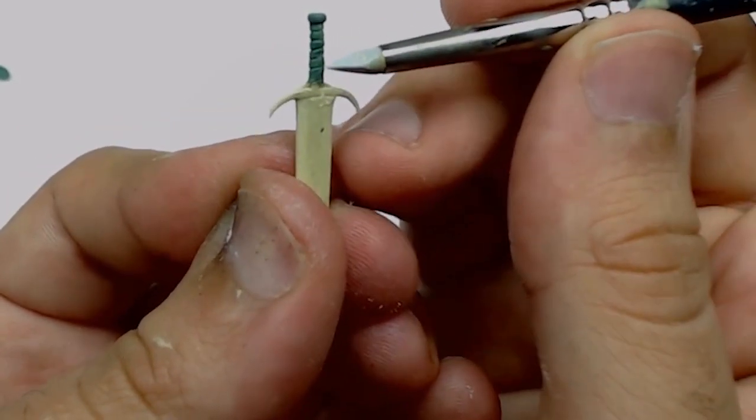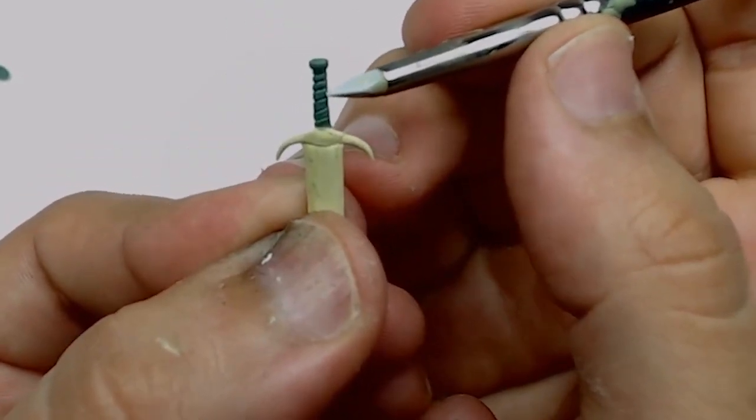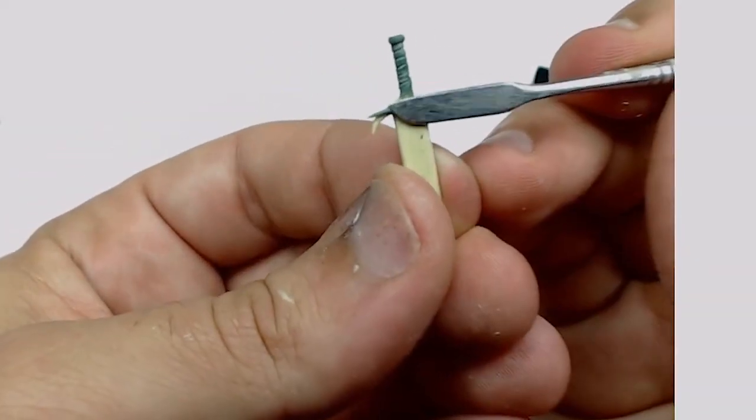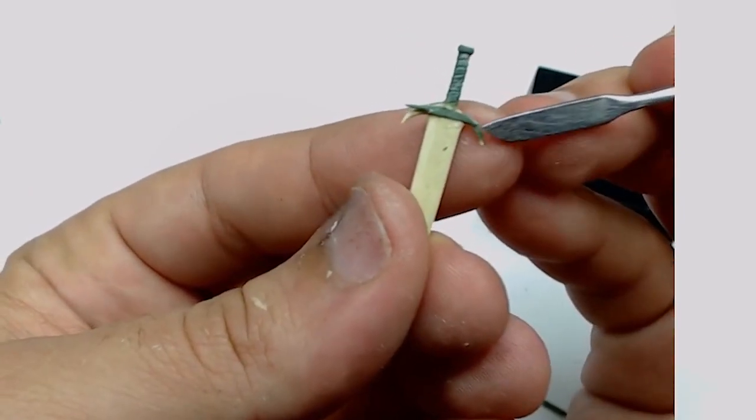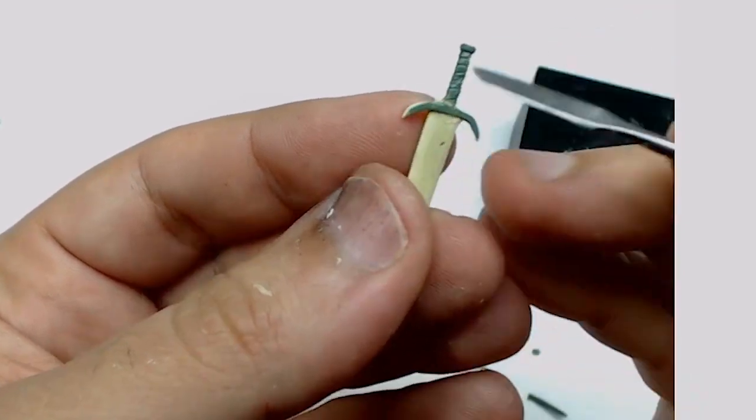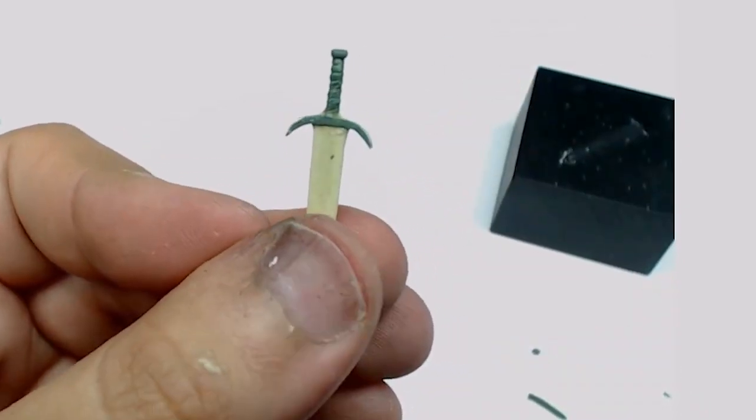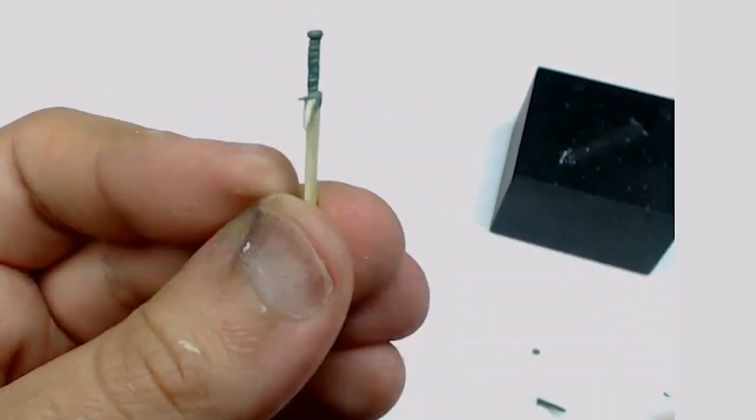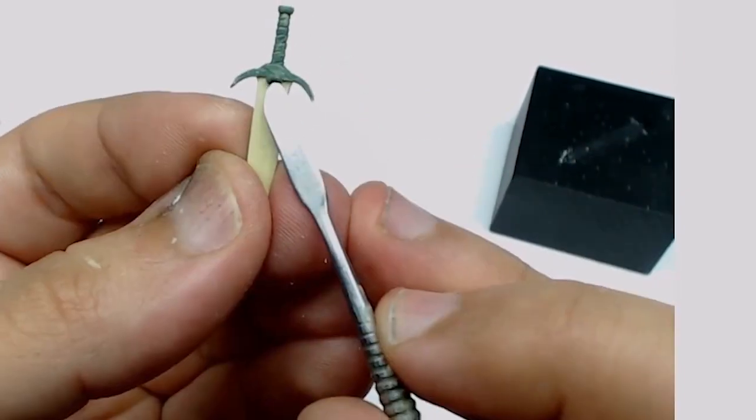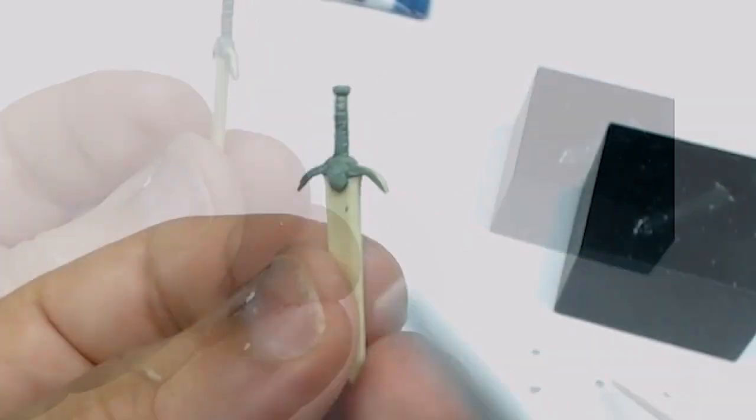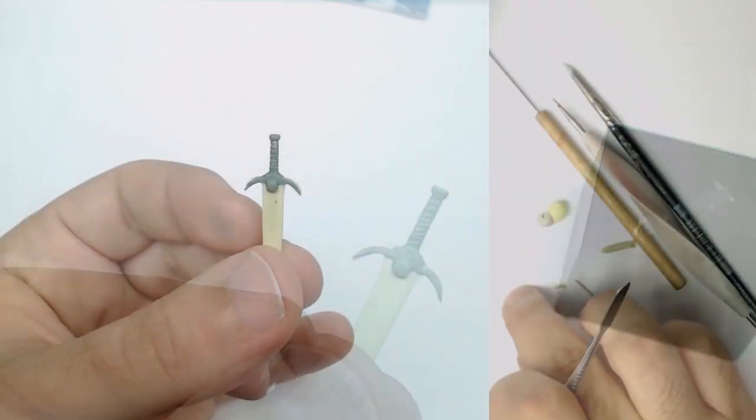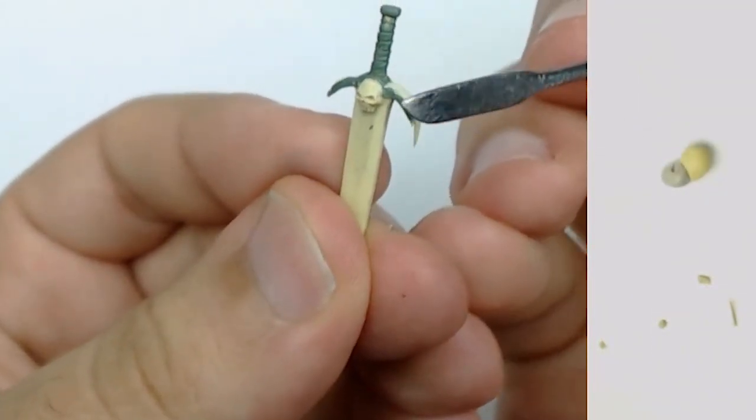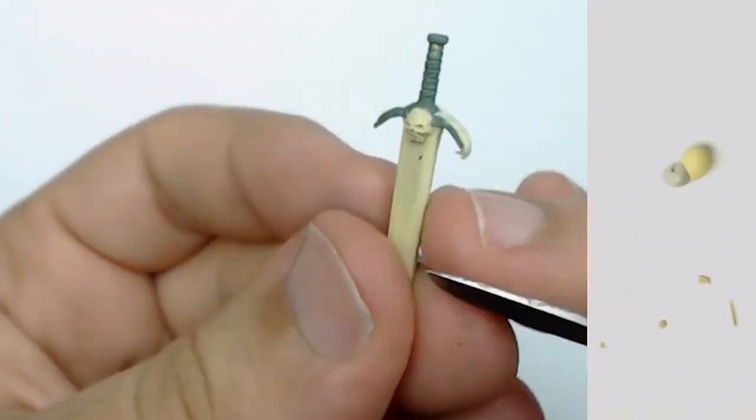I'm going to use a color shaper to create more flat effects on these different elements, and I continue by using green stuff to consolidate the guard. Every time, I use my metal tools first and then my color shaper to clean the surfaces. Don't forget one important thing: the surface you want to work on needs to always be a little bit wet to make sure the putty doesn't stick to your tools.